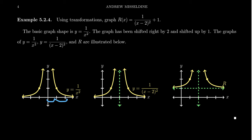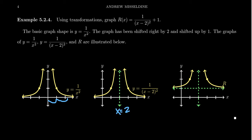Shifting right by 2 units moves the picture to the right by 2. The point (1, 1) comes over by 2 to become the point (3, 1), and the point (−1, 1) comes over 2 units to become the point (1, 1). This also moves the vertical asymptote — the vertical asymptote at the y-axis shifts right to become x equals 2. Notice that the horizontal asymptote is not affected by a horizontal shift — a horizontal line shifted right is still the same horizontal line.